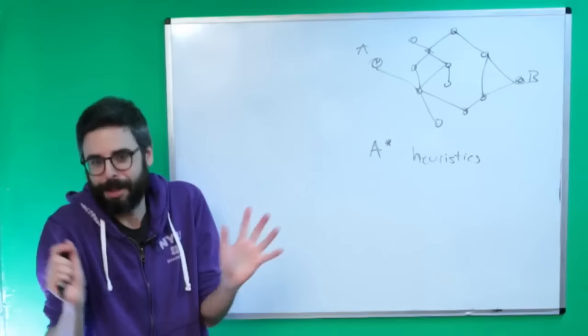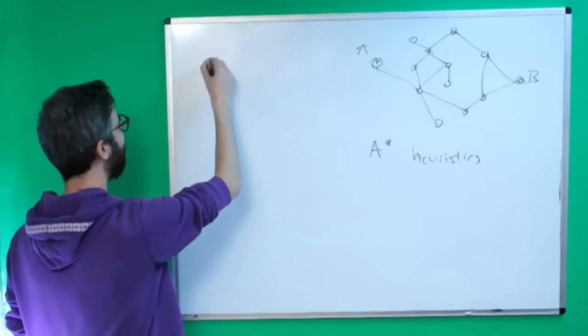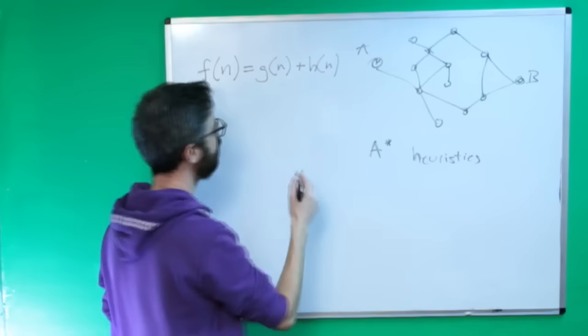The algorithm is typically written with a formula: F(N) = G(N) + H(N). The H stands for heuristic. F(N) is like a cost function — for each one of these nodes, how much does that node cost in terms of our time in getting from point A to point B, the path we're trying to find.